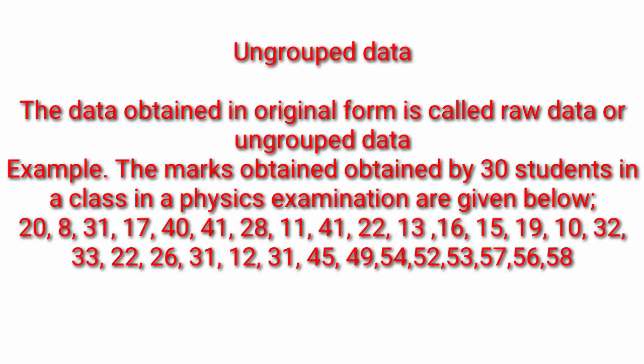First of all, we will discuss grouped data. The data obtained in original form is known as ungrouped data. For example, marks obtained by 30 students — one student obtained 20 marks, another 8 marks, another 31, 17, 40, 41, 28, and so on. All students get different marks — these are the original marks, so this kind of data is known as ungrouped data, meaning there is no grouping of data.